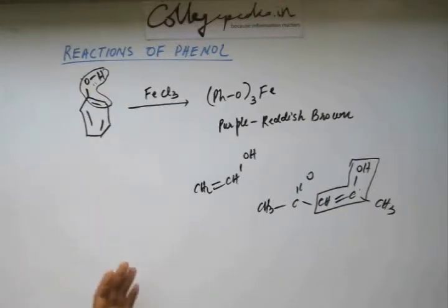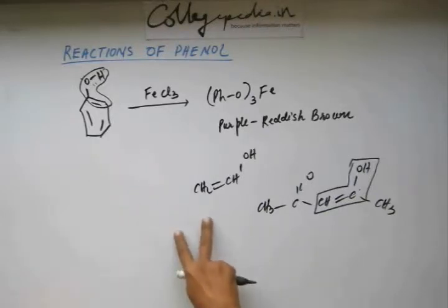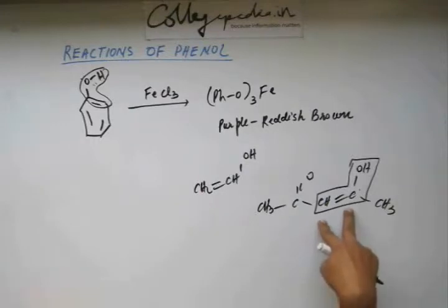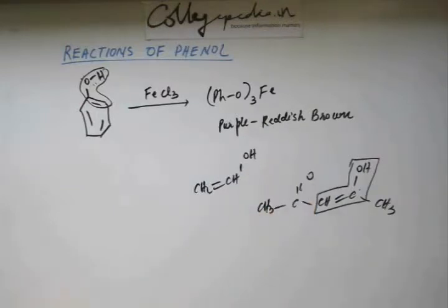Whether it's a phenol or other aliphatic enols, if we have to test that, then we have to go for bromine water test. Because bromine water would be added on aliphatic alkyne, but will not show the kind of addition reaction in aromatic alkyne. If this ferric chloride test is coming positive, that does not confirm phenol - that confirms enol. To confirm phenol we have to go for other tests like bromine water test.